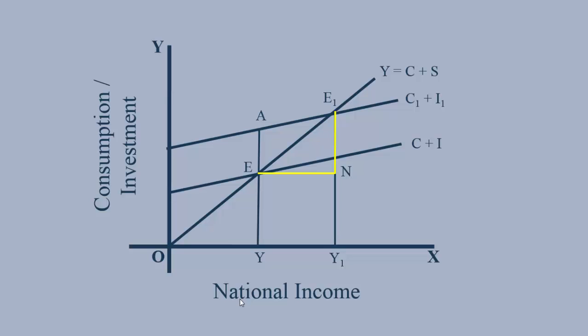Curves C plus I and C1 plus I1 are parallel. So, EA must be equal to E1M. EN is greater than E1M.